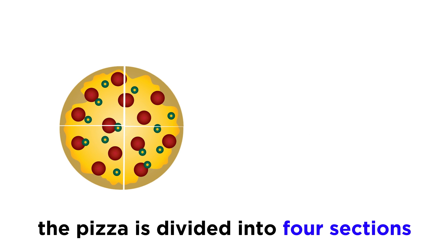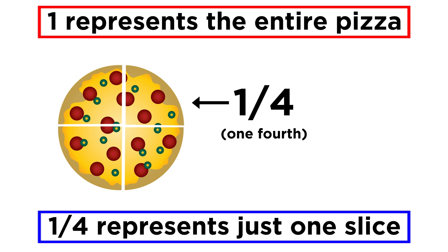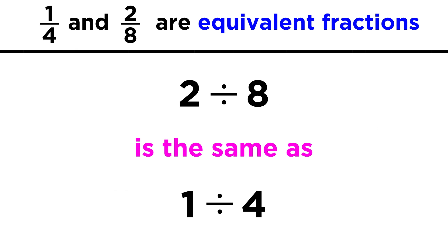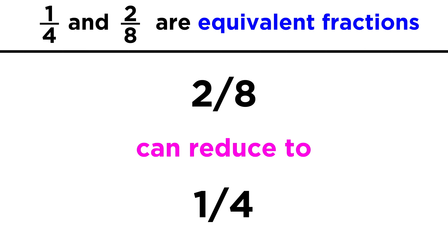Let's say the pizza was instead cut into fourths. Then each slice would be one fourth of the pizza. We can see that eating one fourth of the pizza is the same as eating two eighths, and that's because these fractions are equivalent. Two divided by eight is the same as one divided by four, and two eighths can therefore reduce to one fourth.